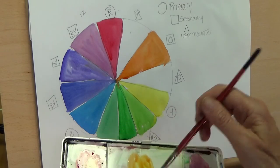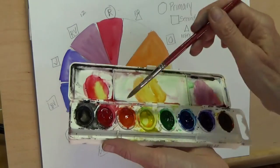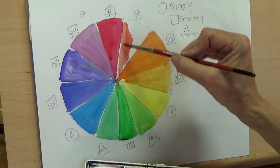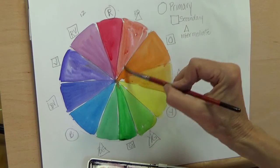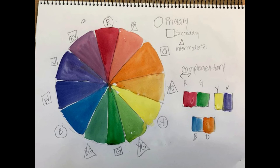Now I have this sped up so don't think you have to paint this fast. Stop the video as you need to. And red-orange. You're going to take these same notes that we've taken today and you're going to make your own color wheel. Your turn.